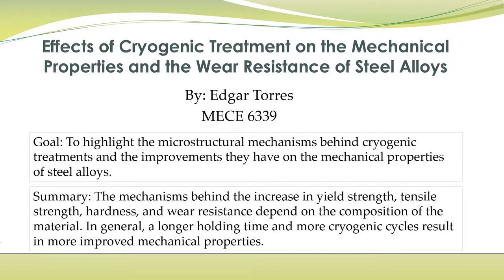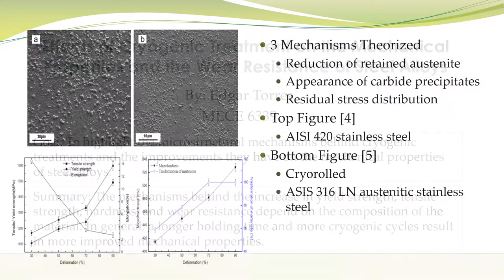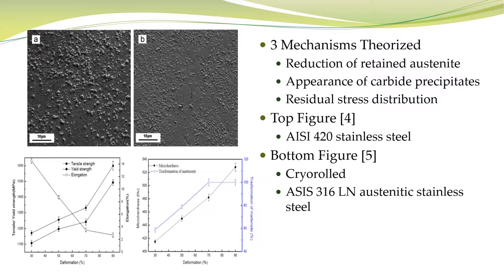These effects depend on the composition of the material, but in general, a longer holding time at cryogenic temperature and the more cycles a material goes through result in more improved mechanical properties. Cryogenic treatment is still a relatively new process and therefore there are three different mechanisms that are theorized and used to explain the different microstructural changes that are seen within a material that undergoes cryogenic treatments.